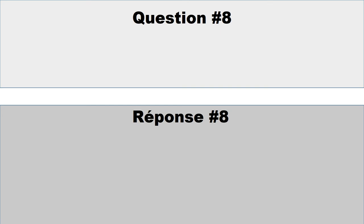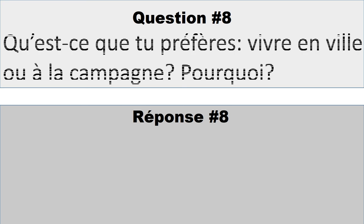Question number eight: Qu'est-ce que tu préfères — vivre en ville ou à la campagne? Pourquoi? «Vivre» is used here instead of «habiter» but both mean to live. «À la campagne» means in the country. A possible answer: «je préfère vivre en ville parce qu'il y a plus de choses intéressantes à faire qu'à la campagne» — I prefer to live in town because there are more interesting things to do than in the country.